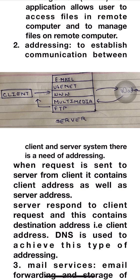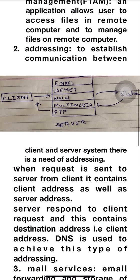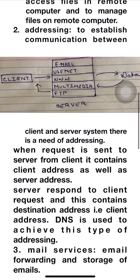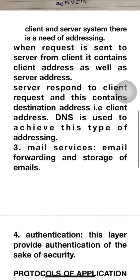As shown in this diagram, an email server is created to access email, and an FTP server is used for transferring files, and so on. When the client needs to access data, a request is sent to the server, in which both client and server addresses are stored, and the server responds accordingly. The destination address — that is, the client's address — is stored in the response. DNS is used to achieve this type of addressing.